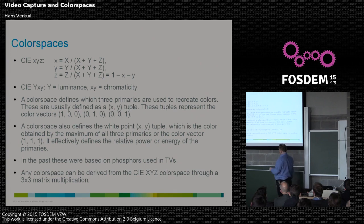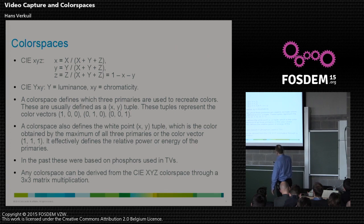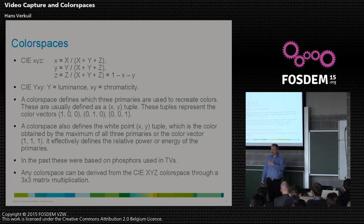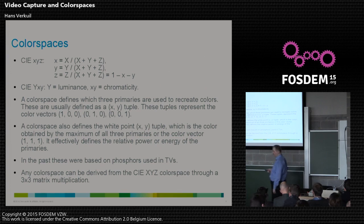Usually it's what's called D65, which is a standardized value supposed to mimic daylight. Photographs apparently use D50, which is slightly different. It's just numbers you crunch that produce a matrix. There used to be physical properties — old CRTs used the colors that the phosphors in the cathode ray tube gave you. These days displays tend to translate to whatever actual light sources they have. Any color space defined can be derived from the mother of all color spaces through a 3×3 matrix multiplication.